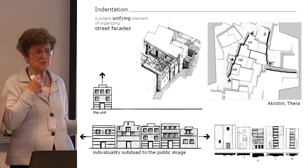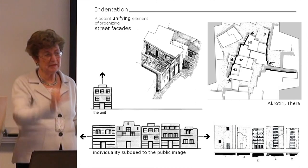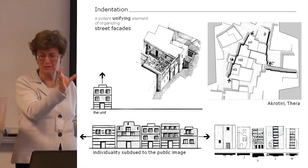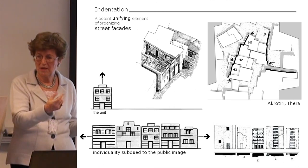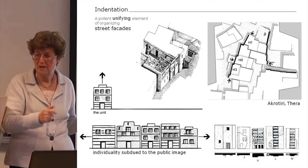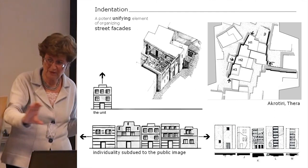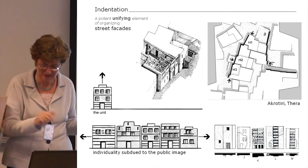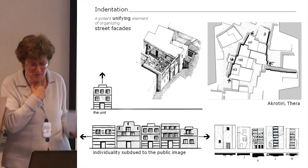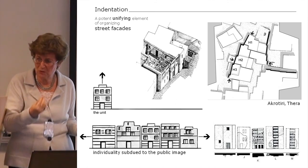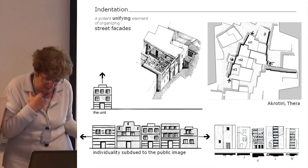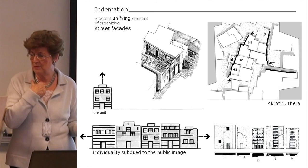What I understand is that this tool of urban design — indentation — is a unifying element. Unification means, first of all, that the verticality of the building — because we are talking of two- and three-storey buildings — when seen separately gives a strong vertical effect. But if you add them into a long street facade, then horizontality prevails. Horizontality is a keyword in Minoan architecture in general. In a way, the individuality of the house, in many formal ways, is subdued to the public image.